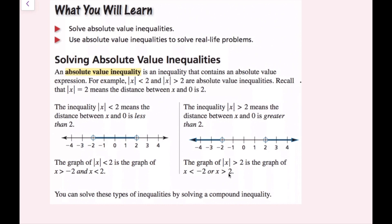Just a quick tip: anytime that you see the absolute value symbol is less than something, it's going to be an and statement. And anytime you see the absolute value of your variable is greater than something, it's going to be an or statement. We're going to solve these by turning the absolute value expressions into compound inequalities.